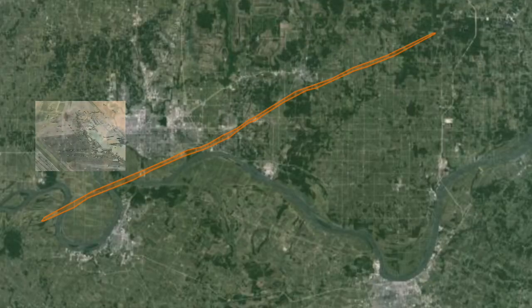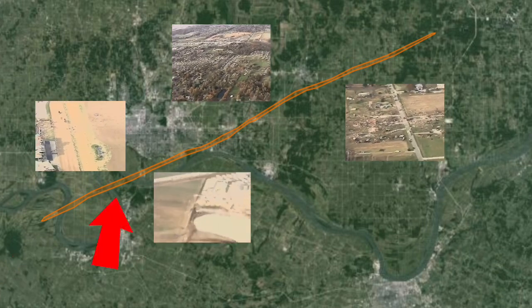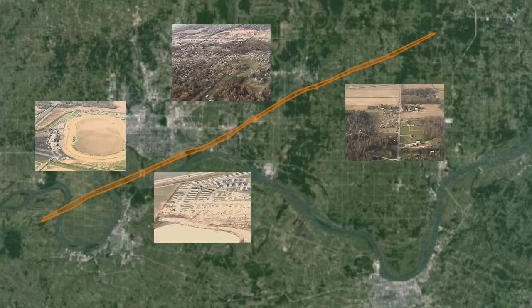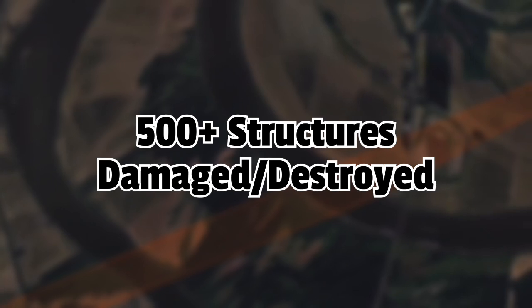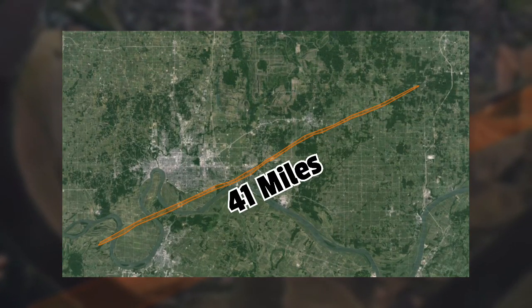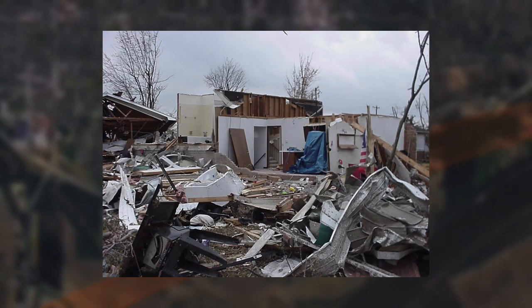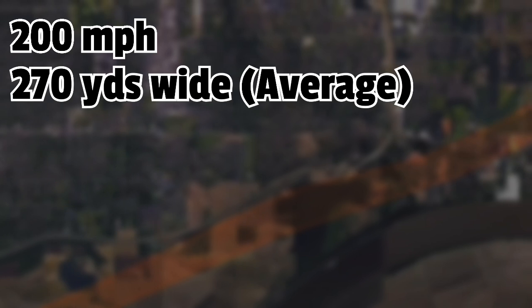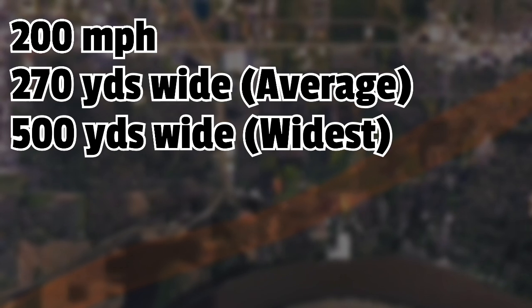As the sun rose along the tornado's path, destruction was seen as far as the eye could see, spanning all the way from Henderson County to Spencer County, with the hardest impacted areas being Eastbrook Mobile Home Park and Newburgh. Over 500 homes and buildings had been severely damaged or destroyed. When the NWS investigated the tornado, they found it had tracked 41 miles and lasted 45 minutes. They preliminarily rated it an F3 due to the severity of the damage, which later became official. Peak wind speeds had topped out at 200 miles per hour, with the width of the tornado averaging 270 yards wide, and at its widest point, 500 yards — about three-tenths of a mile wide.